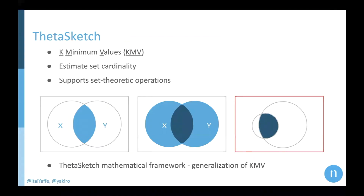So the first approximation — and actually also the last approximation algorithm we decided to use — is called Theta Sketch. Theta Sketch is a generalization of the K Minimum Values idea.